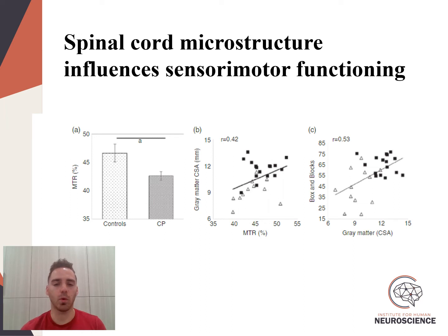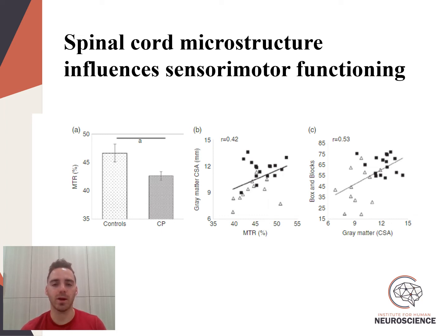Finally, and importantly, several of the outcome measures from our spinal cord data were significantly associated with hand functioning as measured by the Box and Blocks test. Individuals that had higher total cross-sectional area, as well as a higher gray matter cross-sectional area, also tended to perform better on this test, indicating that these changes within the spinal cord may actually be contributing to some of the sensory motor deficits that are seen within this population.